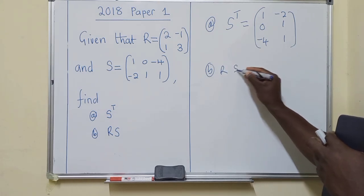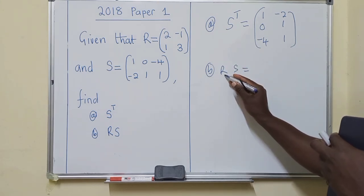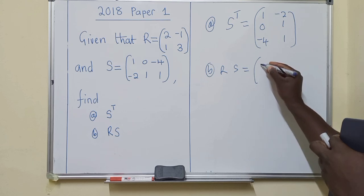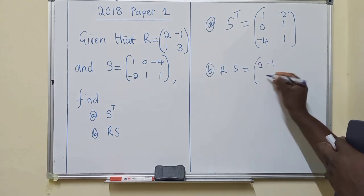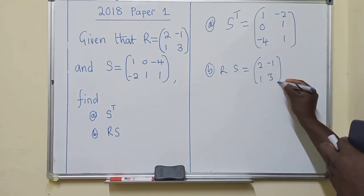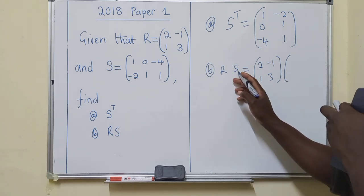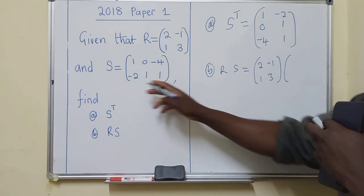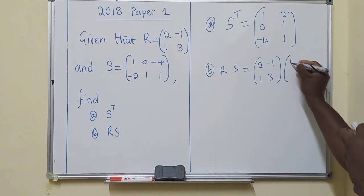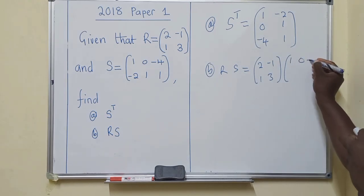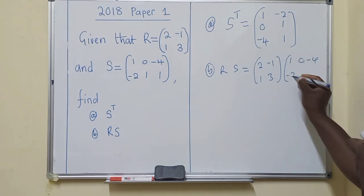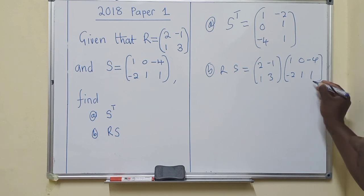So I've got R, meaning get matrix R, which is 2, negative 1, 1, and 3. Multiply it by - oh sorry, get matrix S, this is matrix S. Multiply it by matrix S, which is 1, 0, negative 4, negative 2, 1, 1, just like that.